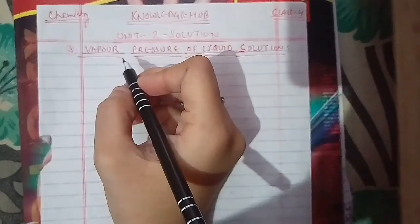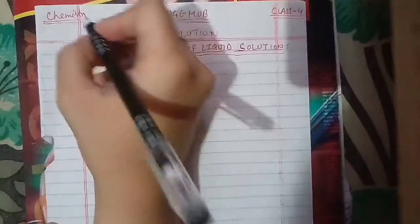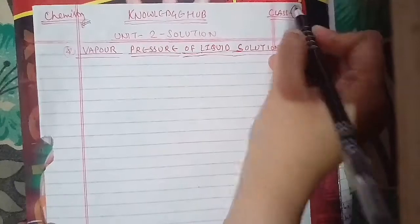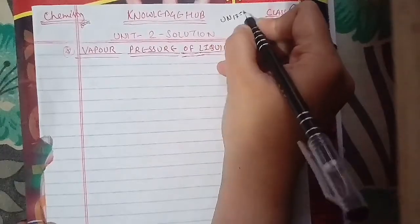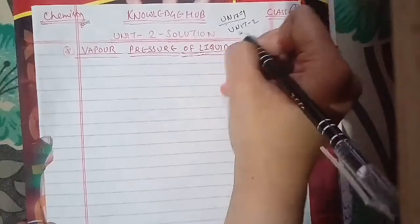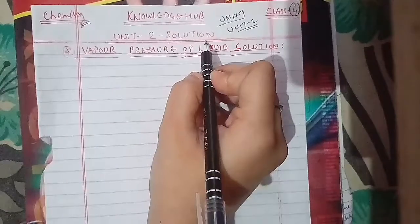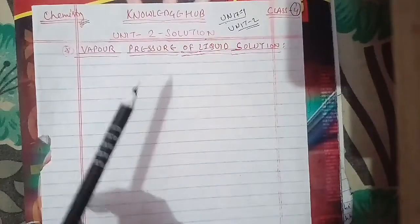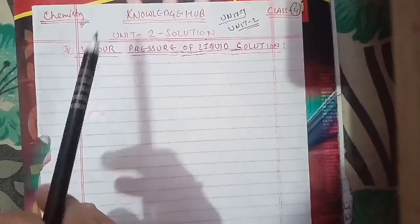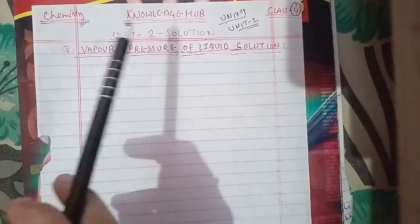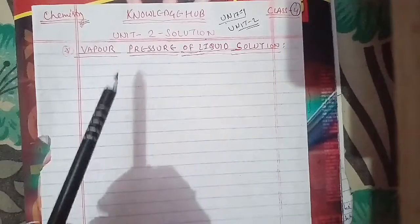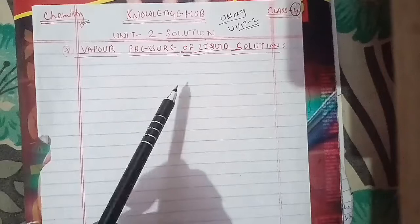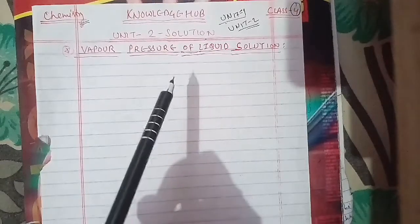Hello everyone, welcome to our channel Knowledge of Friends. Subscribe to our channel and click the bell icon for the latest updates. Today we start with Class 12 Chemistry, Class 4. Before this, we had discussed three classes covering Unit 1 on the solid state and Unit 2 on solutions, where we covered mole fraction, molarity, molality, and related questions. Please like, share, and subscribe so maximum people can benefit.